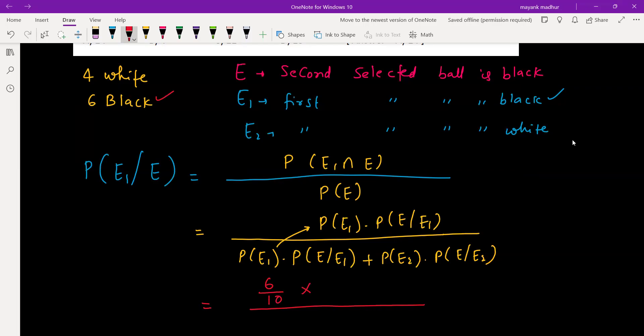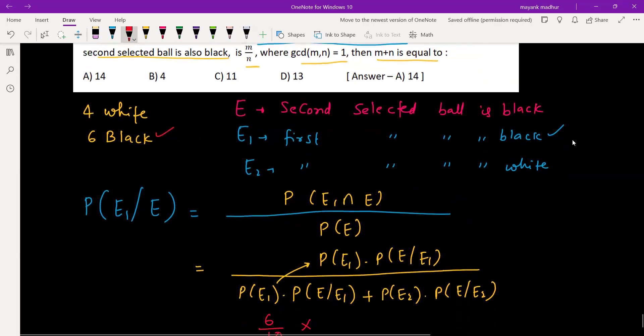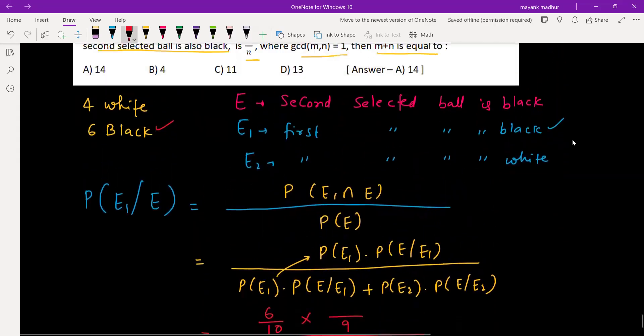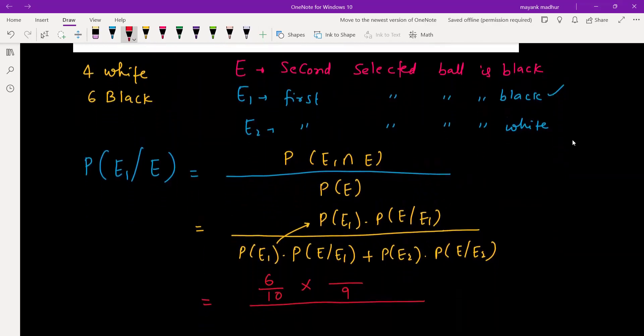Now is replacement happening? One by one without replacement, replacement is not happening. So this means how many balls will remain? Nine will remain. And what did you draw? Black drawn, so five black, and what do you want? Second also should be black, so five by nine.